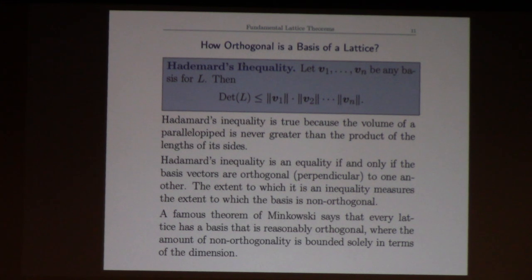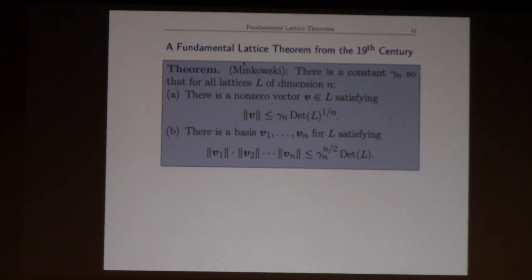So we want to ask to what extent can we find vectors that are as perpendicular as possible. And there's a famous theorem of Minkowski's - Hermite also did some stuff with this - that says every lattice does have a basis that's reasonably orthogonal, where the amount of non-orthogonality is measured just by a function of the dimension.